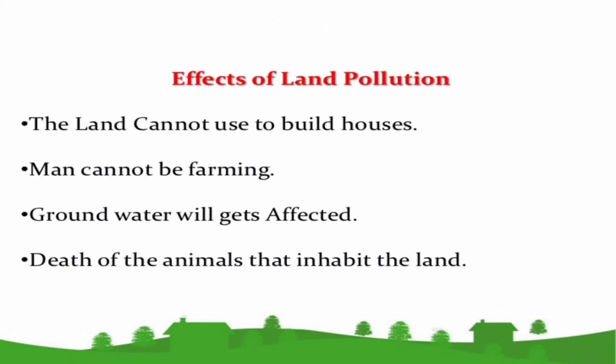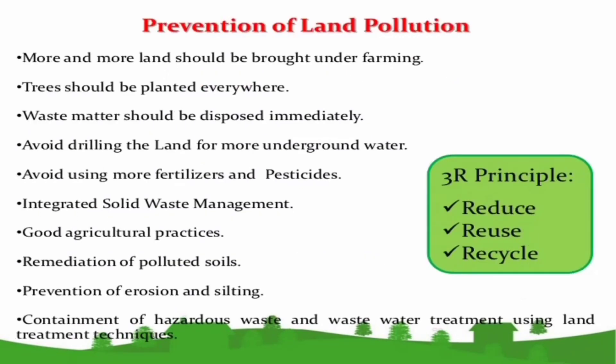Effects of land pollution include groundwater getting affected, death of animals that inhabit the land, inability to farm, and land cannot be used to build houses. Land pollution can be avoided by planting trees, avoiding drilling the land, avoiding using fertilizers and pesticides, and using good agriculture practices.